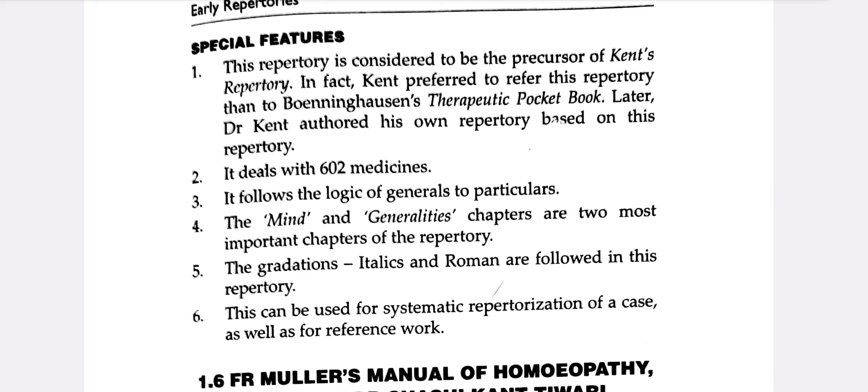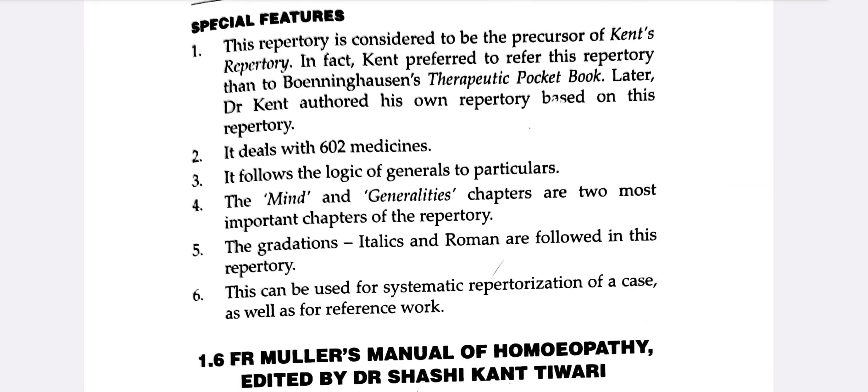The Lippe Repertory served as Kent's precursor repertory, after which Kent wrote his own repertory. Kent's repertory contains 302 medicines. The Lippe Repertory follows the logic of generals to particular. The Mind and Generalities chapters are the two most important chapters of the repertory.